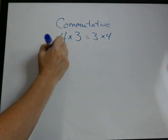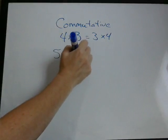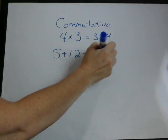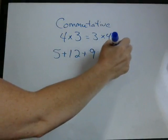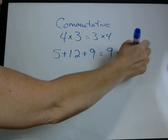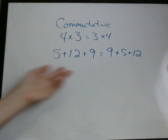Similarly, for addition, let's say we had 5 plus 12 plus 9. The order that we write these in doesn't matter. So we can write this as the same as 9 plus 5 plus 12. These are the same.